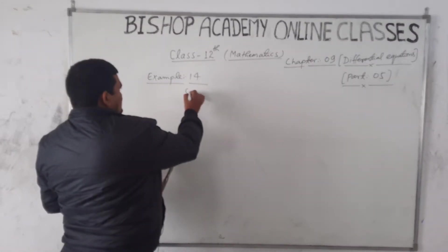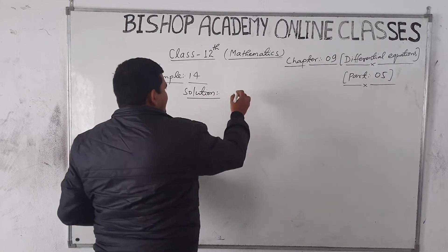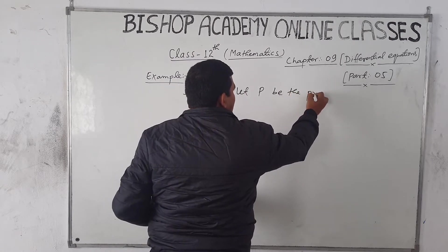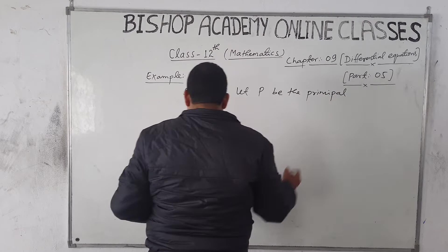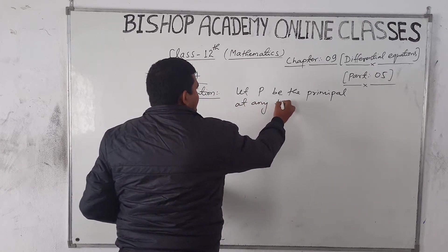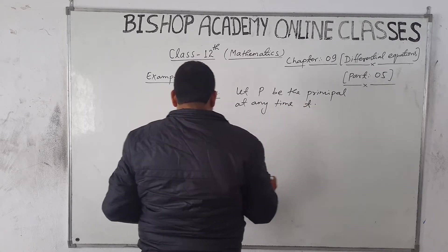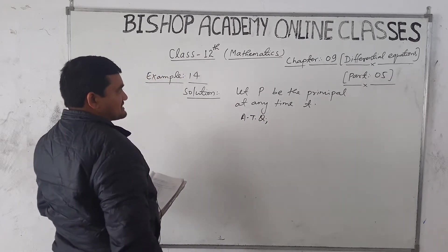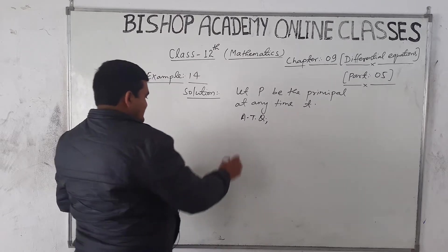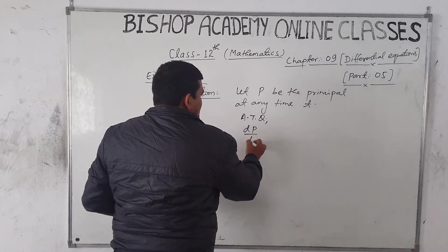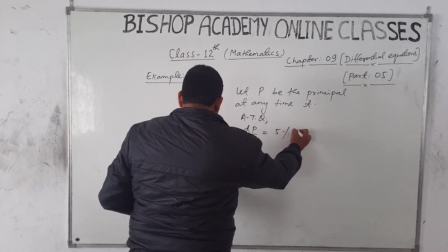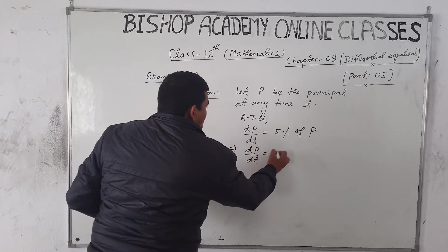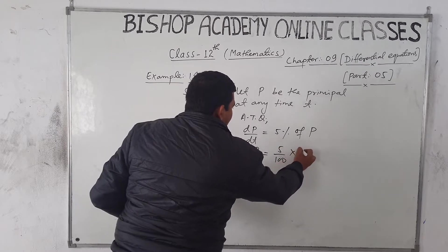Solution. Let capital P be the principal at any time T. According to the question, the rate of change of principal with respect to time is 5% of P. This means dP/dt is equal to 5% of P, which implies dP/dt = 5/100 × P.